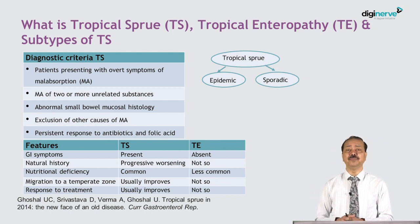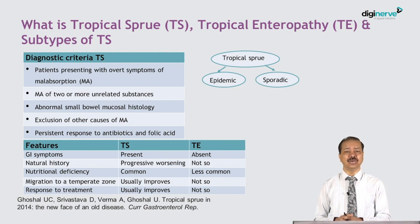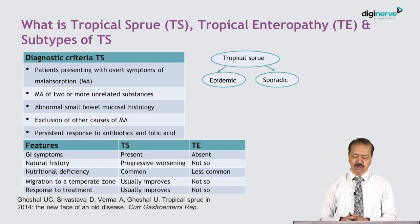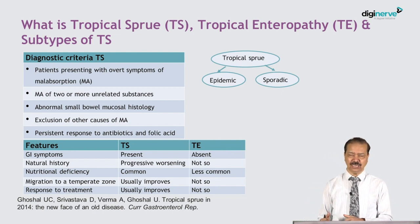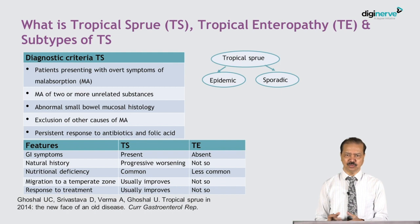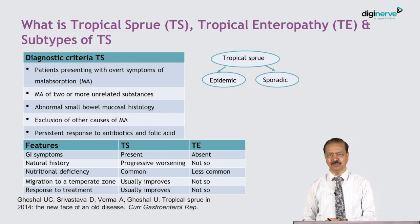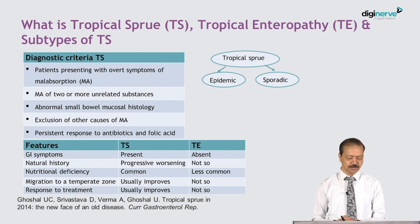The diagnostic criteria for tropical sprue are: overt symptoms of malabsorption, malabsorption of two unrelated substances, abnormal small bowel mucosal histology, exclusion of other causes of malabsorption, and persistent response to antibiotics and folic acid. Tropical sprue can be epidemic or sporadic — Professor V.I. Mathan from CMC Vellore reported epidemic tropical sprue in the community.